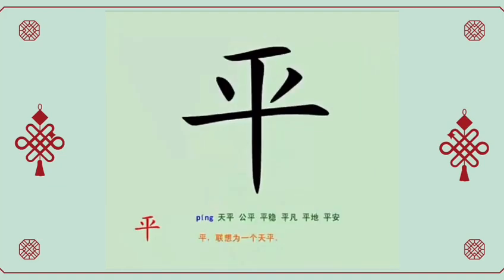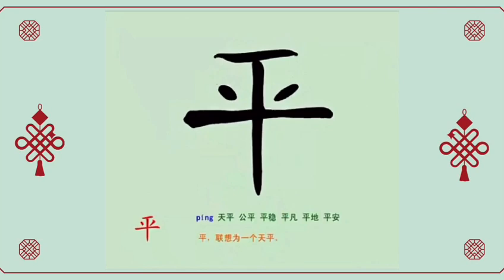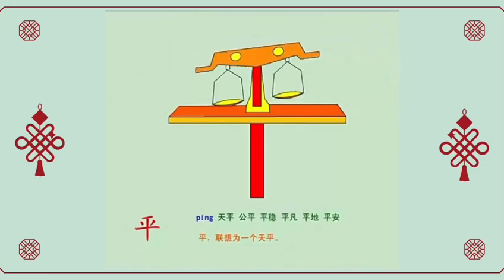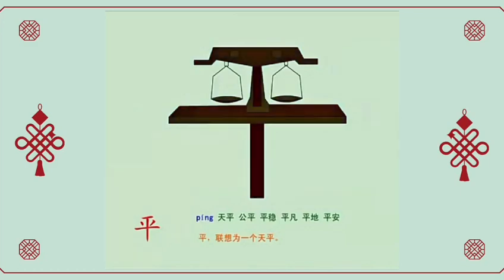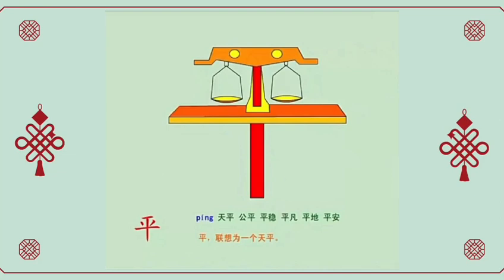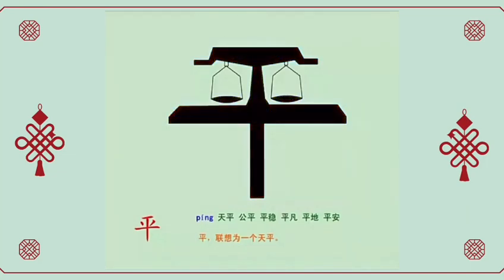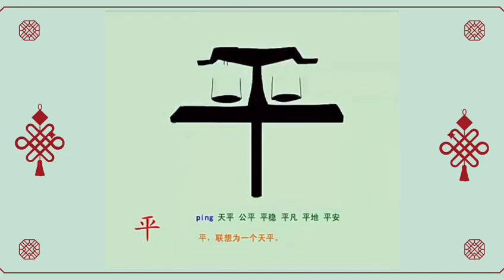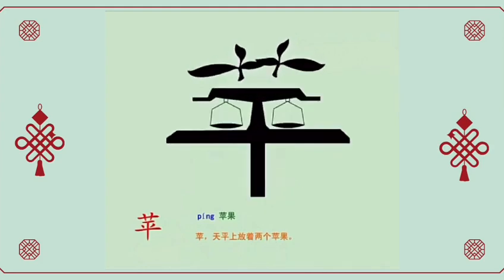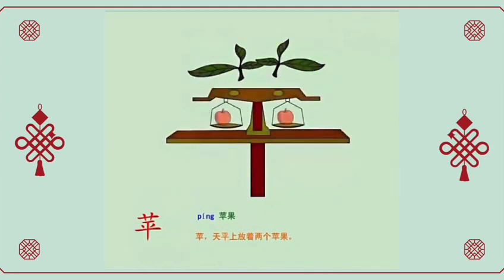平, flat or equal. Imagine a balance scale. 公平, fair. 平稳, stable. 平安, safe. There are two apples on the balance.